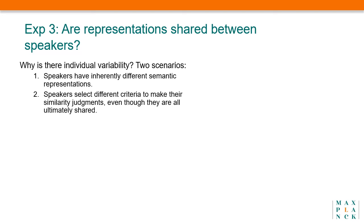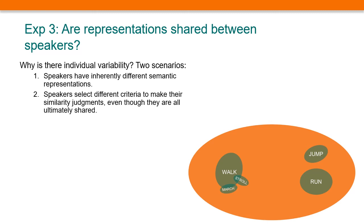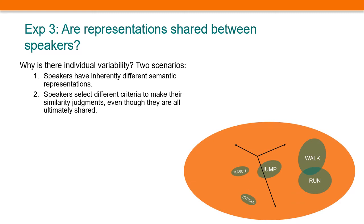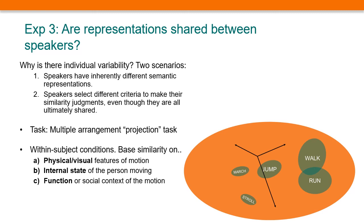So why do we find so much individual variability in how speakers judged verb similarity? We consider two scenarios. First, it could be that speakers just have inherently different semantic representations of the verbs. However, a second possibility is that speakers select different criteria to make their similarity judgments even though ultimately they think about these verbs in similar ways. The second scenario has a geometrical interpretation: that space is high-dimensional, and depending on what subset of dimensions speakers focus on, they will order the same verbs differently. To tease apart these two possibilities, we devised what we call our projection task. The paradigm is identical to experiment one — a similarity arrangement task — but now we ask each participant to organize the verbs according to three different criteria: the physical and visual similarity of motion, the internal state of the person moving, and the function or social context of the motion. We call these projections because participants have to project the verb semantics onto different subspaces.